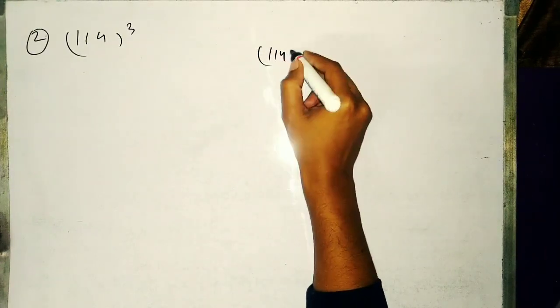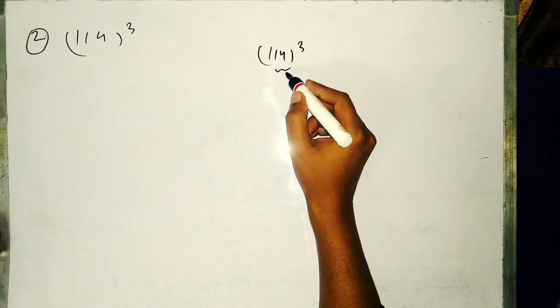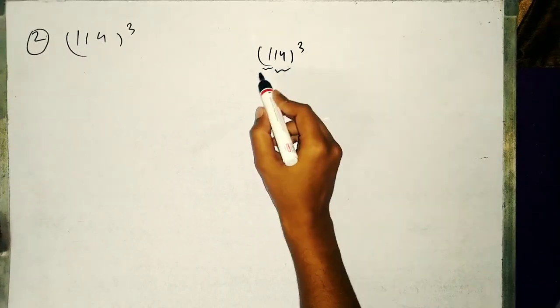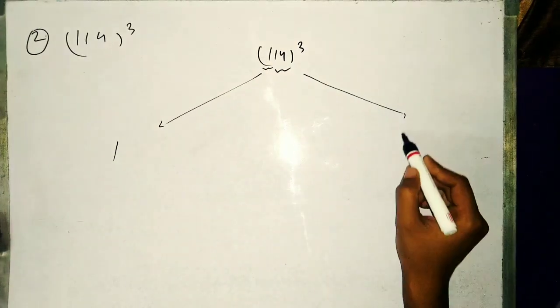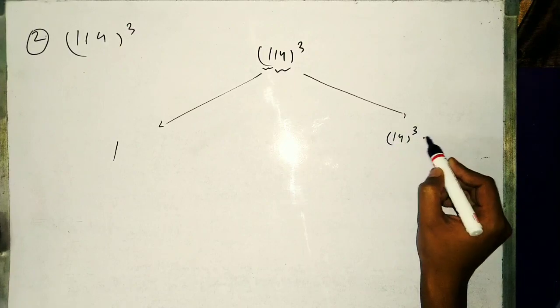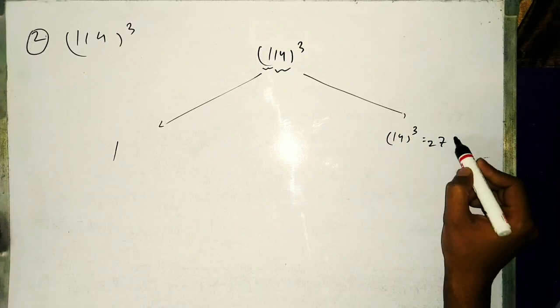Similarly, we can take another example as 114 cube we have to find. So 114 cube, take 14 as second digit, 11 as first digit. 1 cube will be 1 and 14 cube will be 2744.